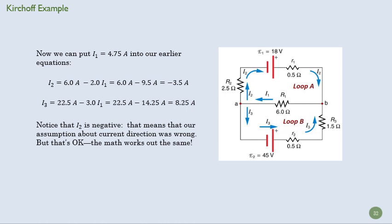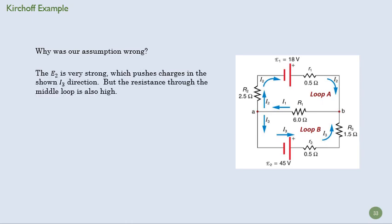But that's okay. We were wrong, but we learned something. And our math, we don't have to redo anything. Now we know that this loop, that the current goes through that loop that way, and that our second loop is really this up here. It's going to go all the way around like that.